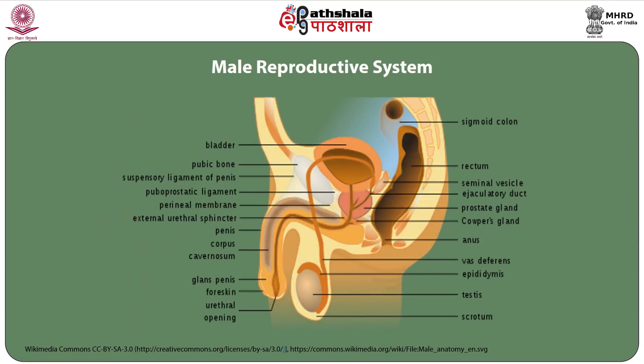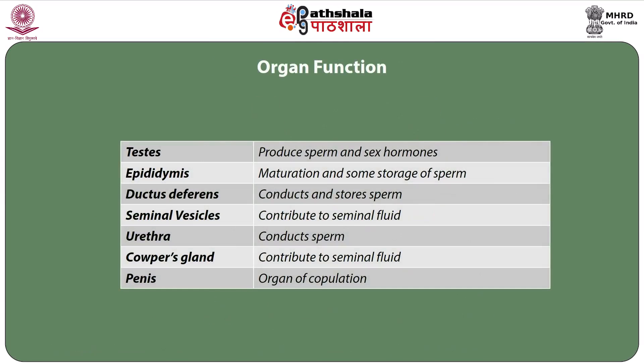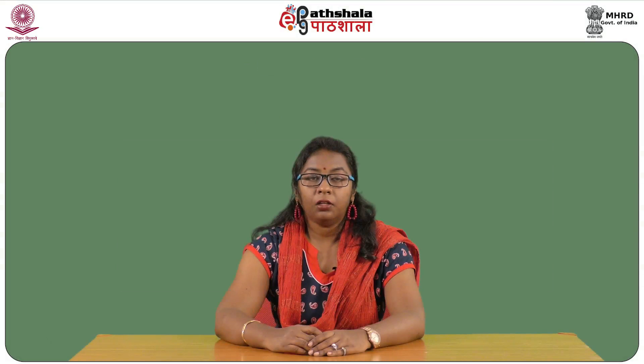The male reproductive system consists of the following organs: the testis, epididymis, the ductus deferens, and seminal vesicles. The function of the testis is to produce the sperm and sex hormones. The function of the epididymis is to cause maturation and also store some of the sperms. Ductus deferens functions by conducting and storing the sperms. Seminal vesicles contribute to the seminal fluid. Other organs include the urethra, the Cowper's glands, and the penis. The urethra conducts the sperm, the Cowper's glands contribute to seminal fluid, and the penis is the organ of copulation.